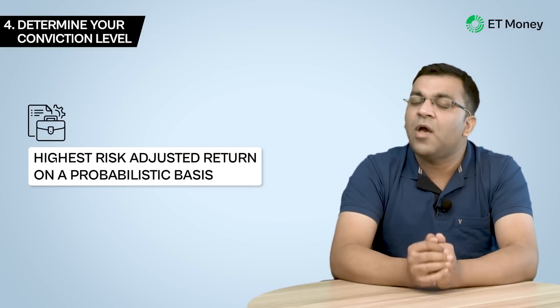The final step in the investment thesis creation process is to write down your expected return and the level of conviction you have in that investment to achieve that return. If you are looking at multiple proposals, this step will help you select the investment likely to give you the highest risk-adjusted return on a probabilistic basis. Creating an investment thesis is not very difficult if one follows these four steps in their entirety.